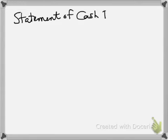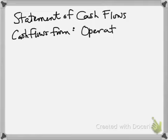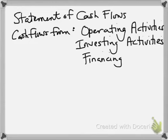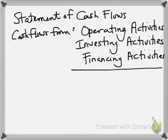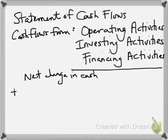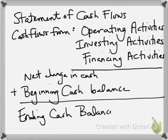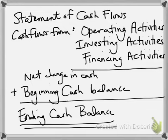Last, we have the statement of cash flows. Cash flows are broken down into three categories: cash flows from operating activities, from investing activities, and from financing activities. We summarize the results of those three, which gives us the net change in cash. We add to it the beginning cash balance, and that leads us to the ending cash balance — essentially reconciling the difference between how much cash we had at the beginning of the year compared to the end. And those are the four basic financial statements.